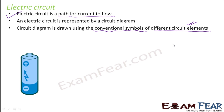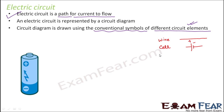Let us look at some of the common symbols. Wires are represented by straight lines. A cell is represented like this — any cell has a positive terminal and a negative terminal, because cells are the sources of electric current. The longer strand represents the positive terminal and the smaller one represents the negative terminal.